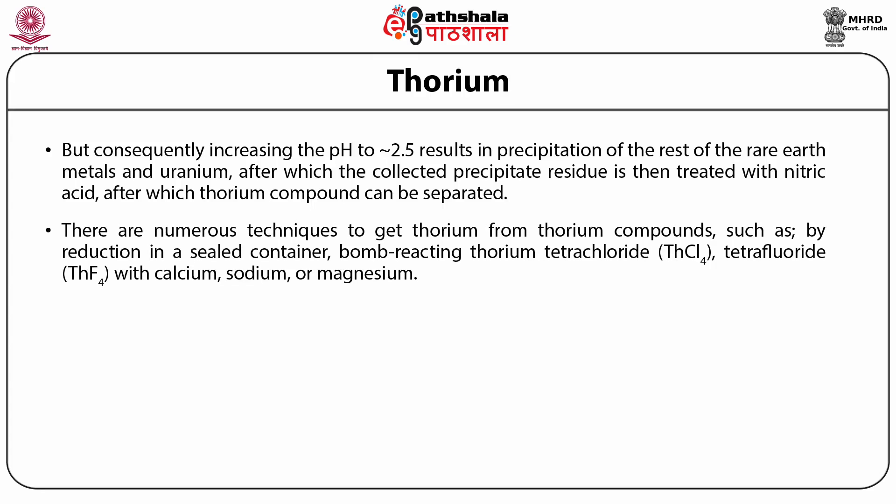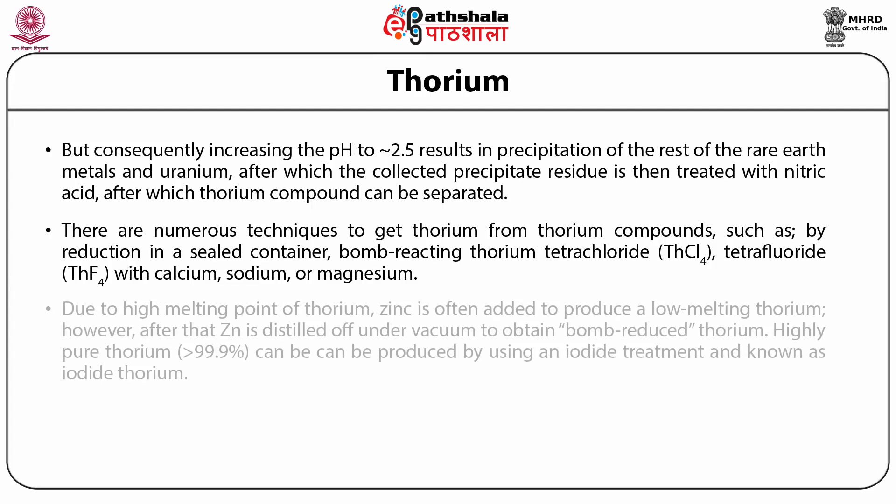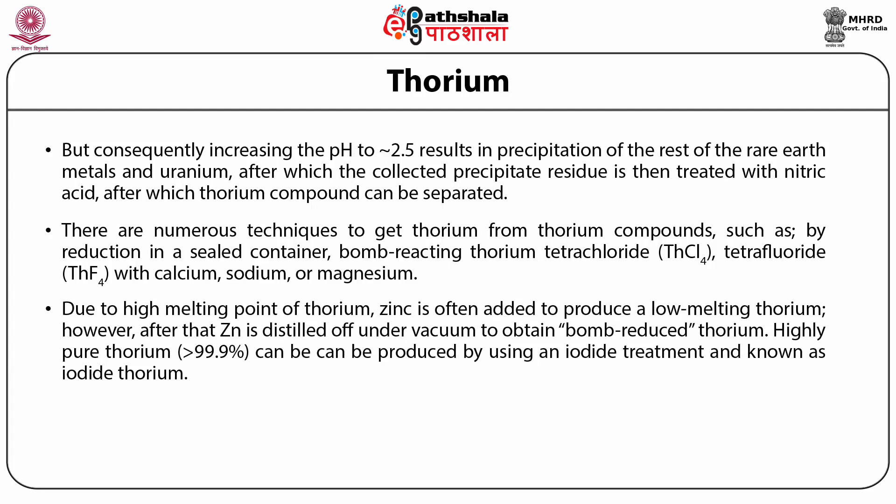There are numerous techniques to obtain thorium from thorium compounds, such as by reduction in a sealed container — bomb reacting thorium tetrachloride or tetrafluoride with calcium, sodium or magnesium. Due to the high melting point of thorium, zinc is often added to produce a low-melting thorium alloy, after which zinc is distilled off under vacuum to obtain bomb-reduced thorium.